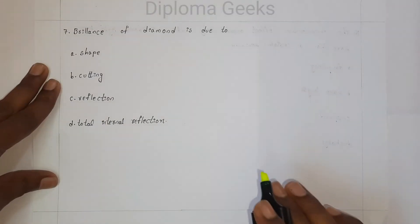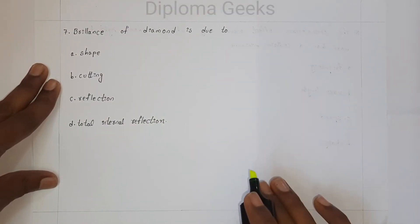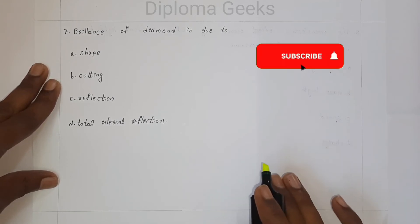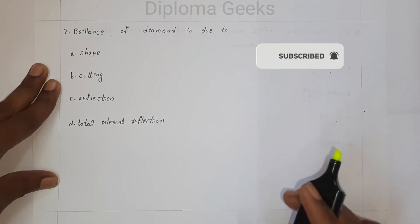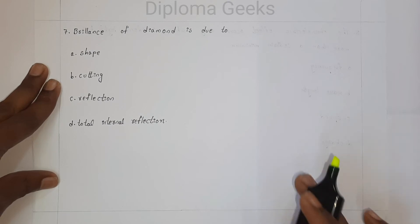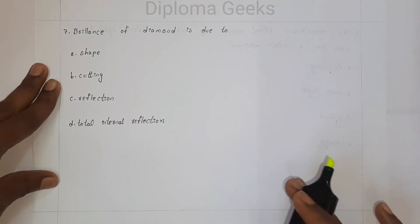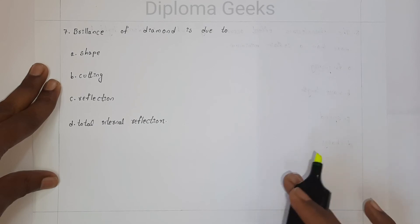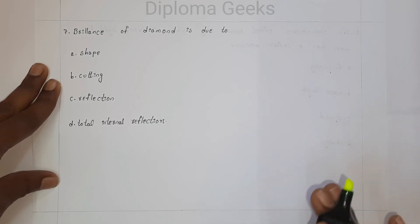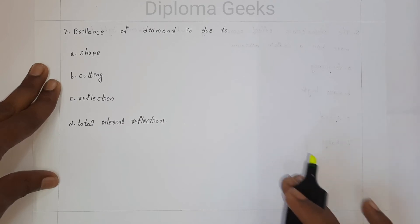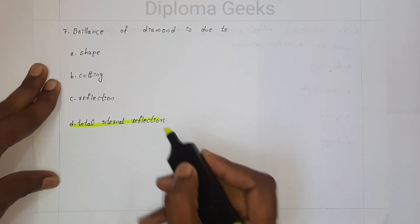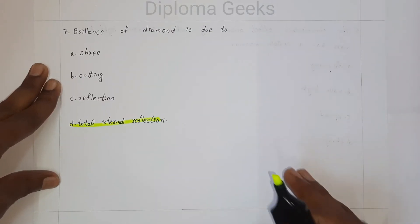Question number seven: the brilliance of a diamond is due to — option A: shine shape, option B: cutting, option C: reflection, option D: total internal reflection. The brilliance of a diamond occurs because at every point inside the diamond, total internal reflection happens, producing shine at every single point. So the answer is option D: total internal reflection.